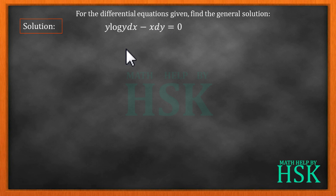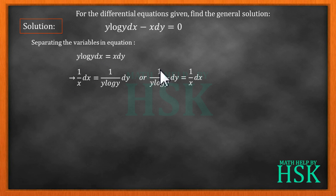Therefore we start with separating the variables. To begin with we take x dy to the right hand side, to obtain the equation as y log y dx equal to x dy. On cross multiplication we get 1 by x dx is equal to 1 by y log y dy. Or we can write 1 by y log y dy is equal to 1 by x dx.